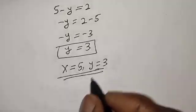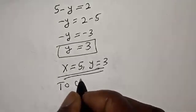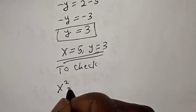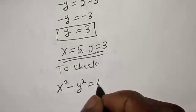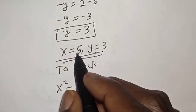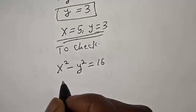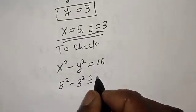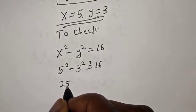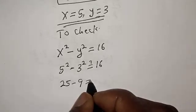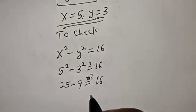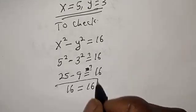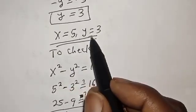This is the final answer. We can check to confirm if our answer is right. We have the given equation: x squared minus y squared must equal 16. When x is 5 and y is 3, we have 5 squared minus 3 squared, which must equal 16. 5 squared is 25, minus 3 squared which is 9: 25 minus 9 equals 16, which satisfies the given equation. So x equals 5 and y equals 3.